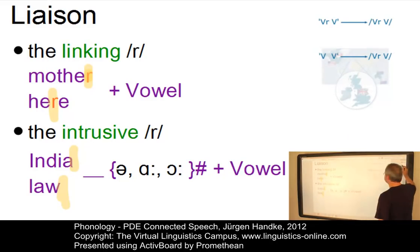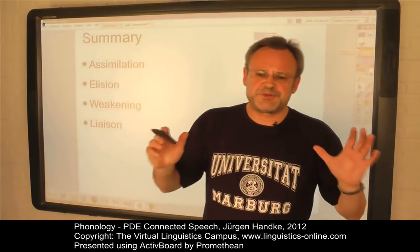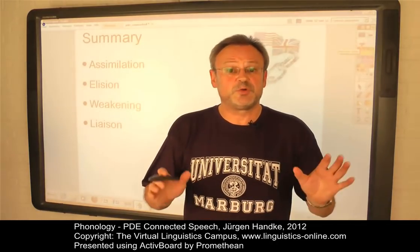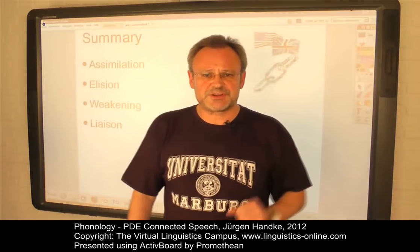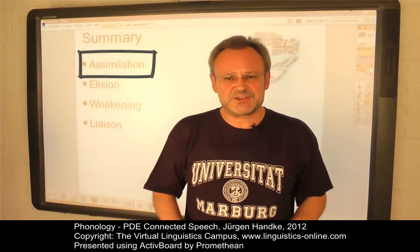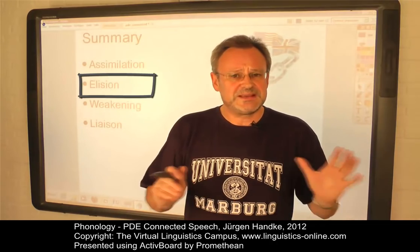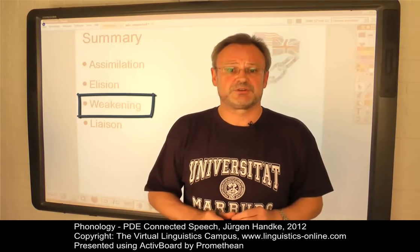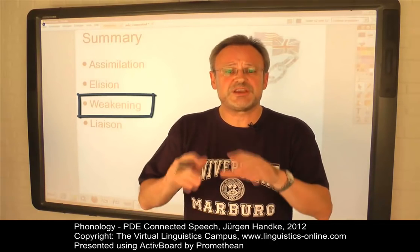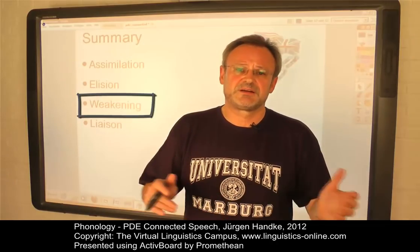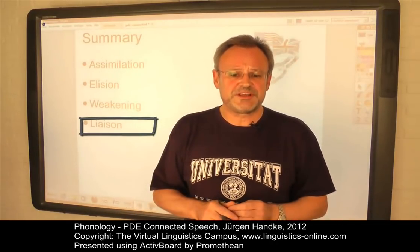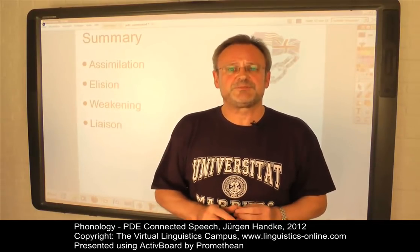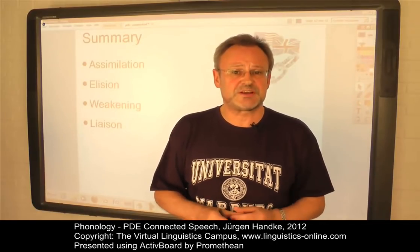Let's summarize. English speech is subdivided into intonation units, and within each intonation unit only few words are stressed. This triggers the following processes: assimilation — phonemic change; elision — the omission of phonemes; weakening — the reduction of vowels in monosyllabic function words; and liaison — a process of linking. All these phenomena are consequences of the rhythmic organization of spoken English as a stress-timed language.